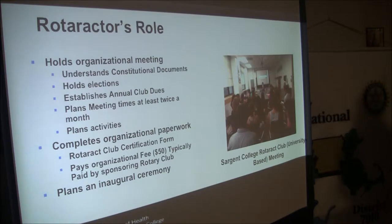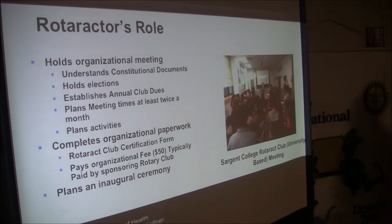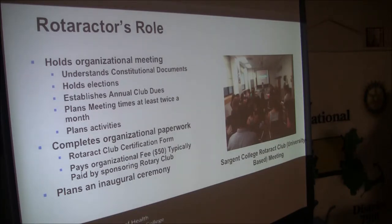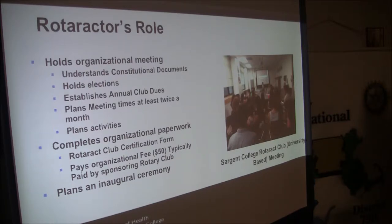What's the Rotaracter's role? They're going to hold an organizational meeting. Once we know there are at least 15 people interested, the Rotary advisor is still there working with the Rotarackers as they get organized. We all have the ability to look at the Rotaract Handbook, which is fabulous — you can easily download it to get all of this information. What's important is for the Rotarackers to really understand the constitutional documents. They need to hold elections, and I'll go over the roles of the different executive board members, because that's crucial. To be successful as a Rotaract Club, you really have to have strong leadership in those executive roles.